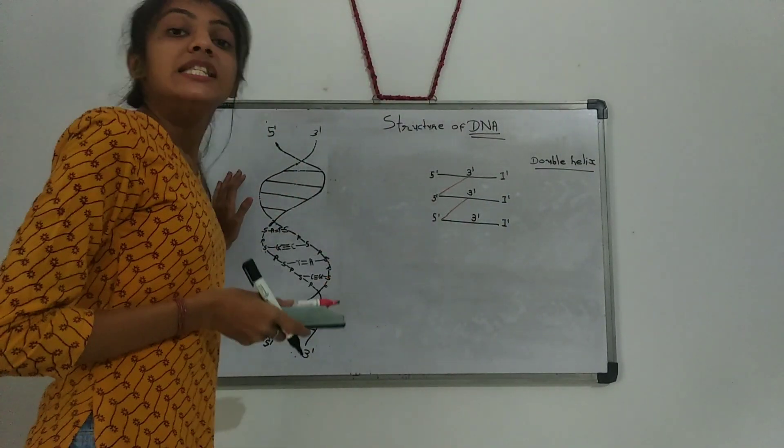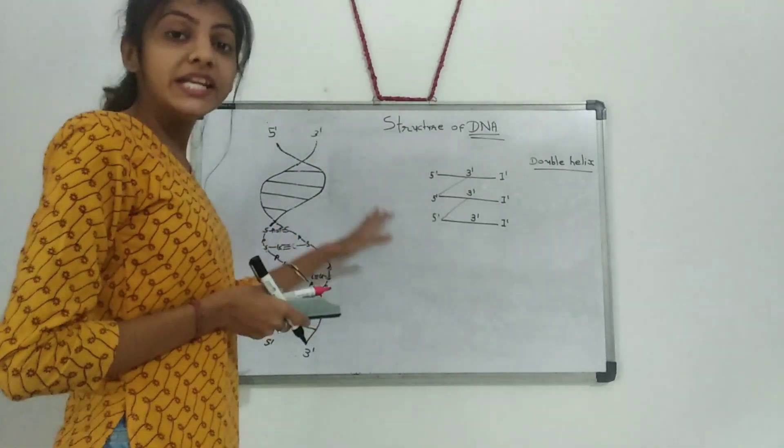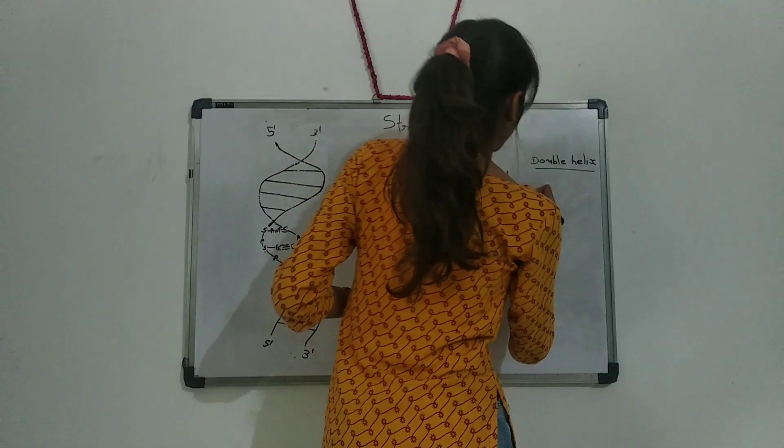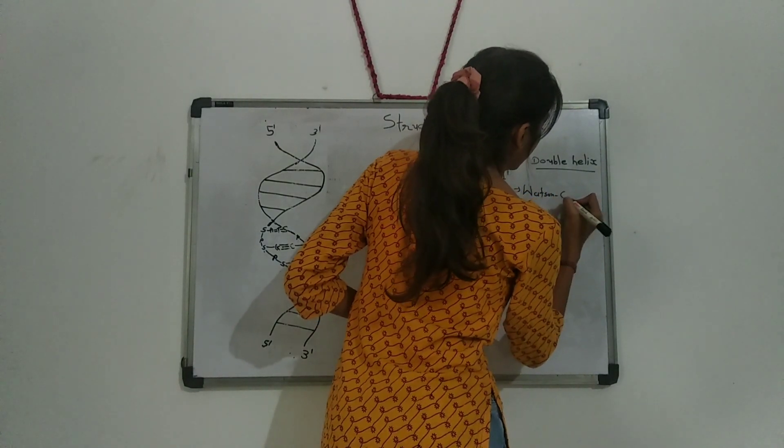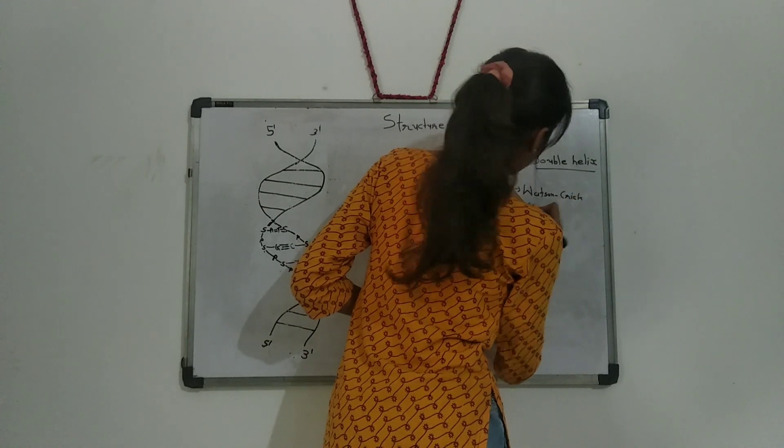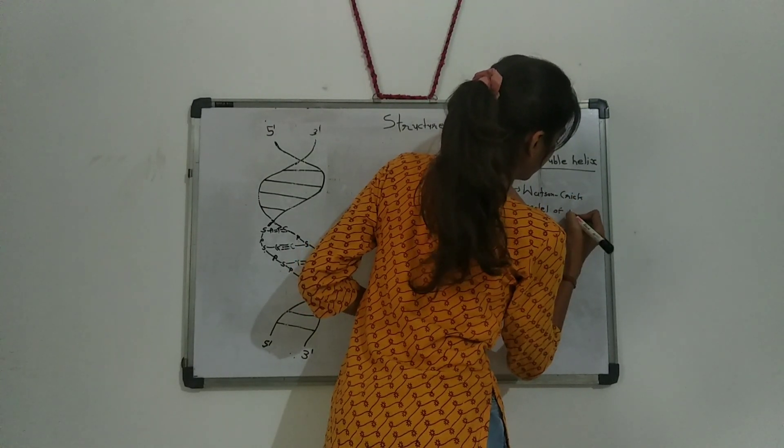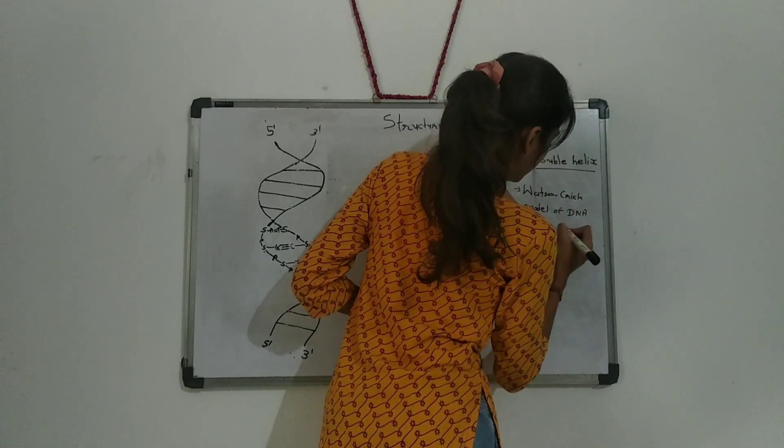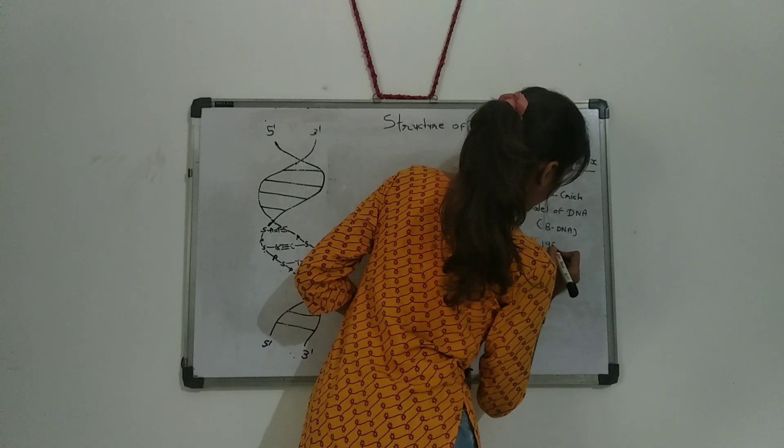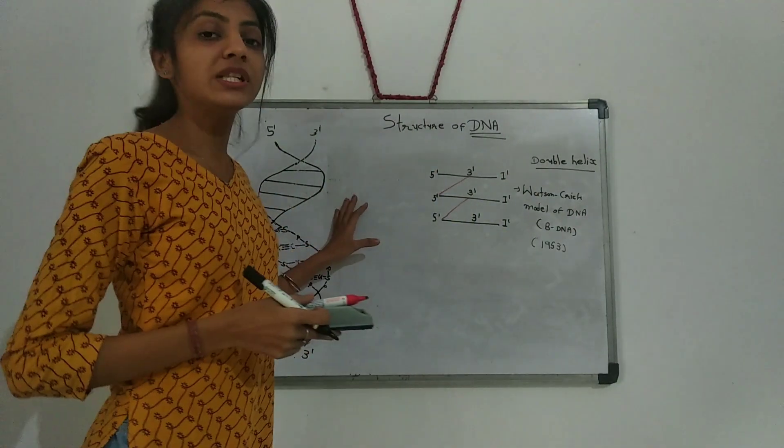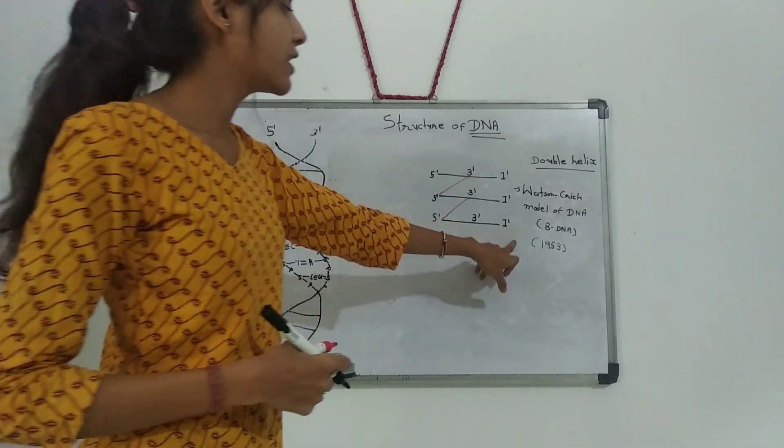This is the cellular feature of Watson and Crick model of DNA, known as the B-DNA. This is the most acceptable structure of DNA double helix which they gave in 1953.